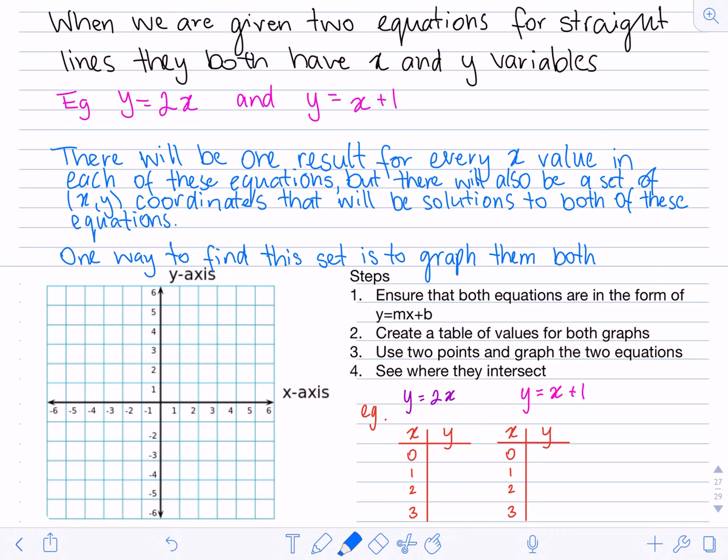The second step is to create a table of values for both graphs. Now, in this example, I've given the table of values. However, you can make any table of values because we know when we graph straight lines, we only need two points to join them and continue them on.